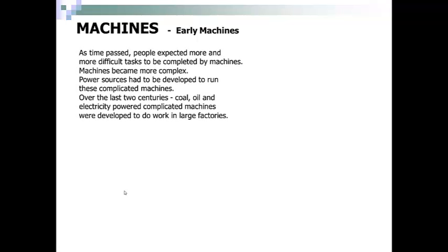As time passed, people expected more and more difficult tasks to be completed by machines. Machines became more complex. Power sources had to be developed to run these complex machines. Over the past two centuries, coal, oil, and electricity-powered complicated machines were developed to do work in large factories.